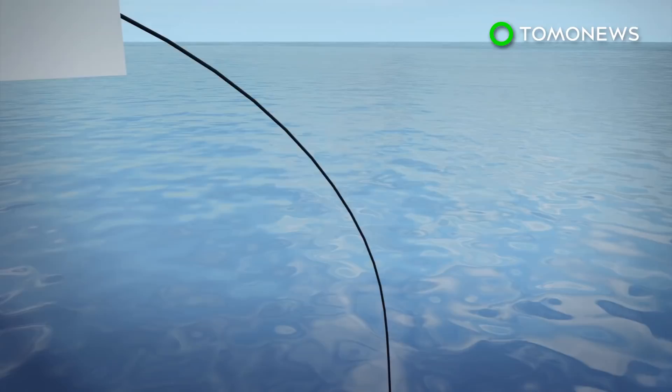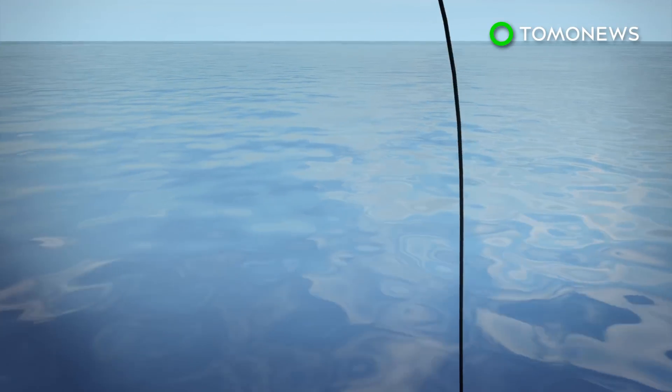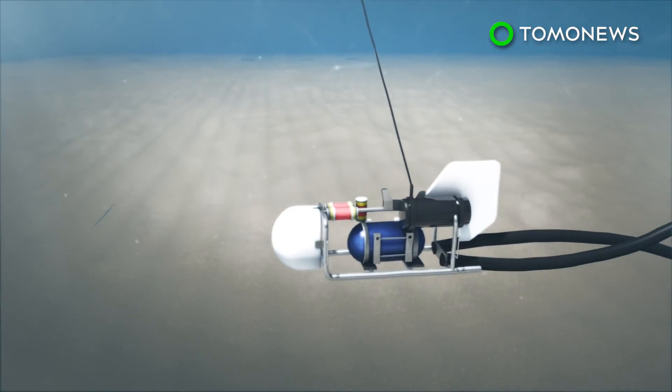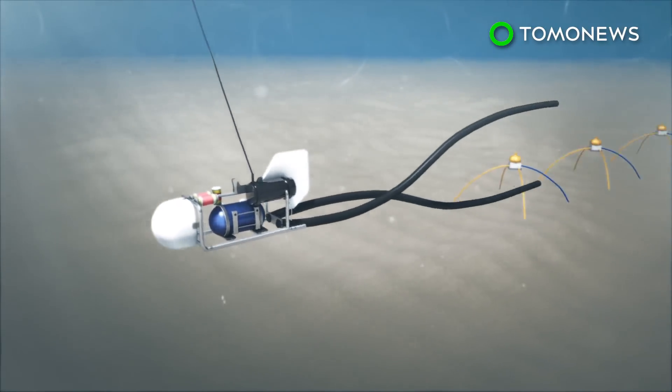According to a study published in Scientific Reports, Columbia University scientists used an electromagnetic receiver to survey offshore groundwater deposits below the Atlantic Ocean.